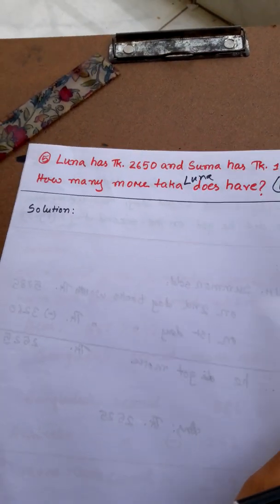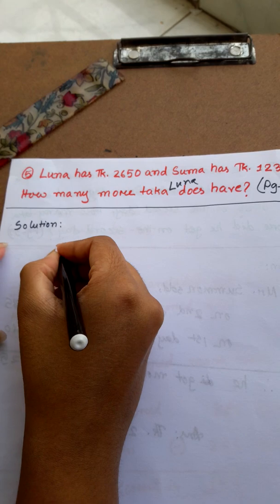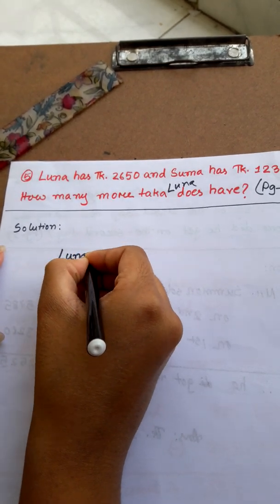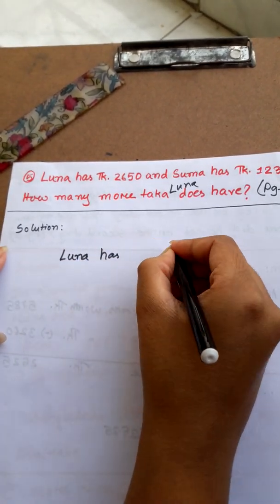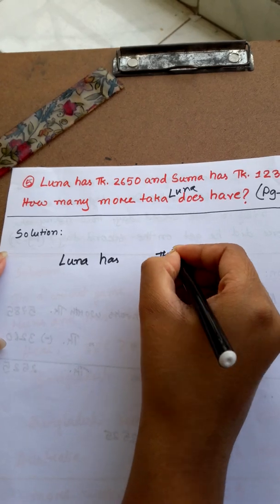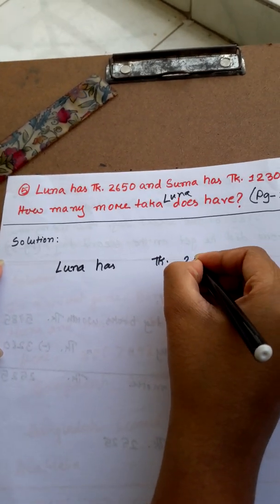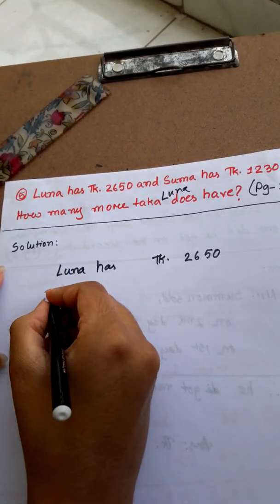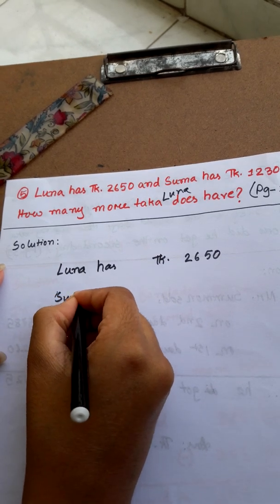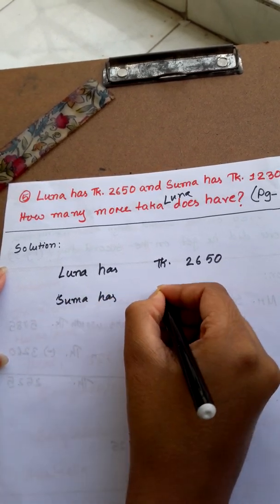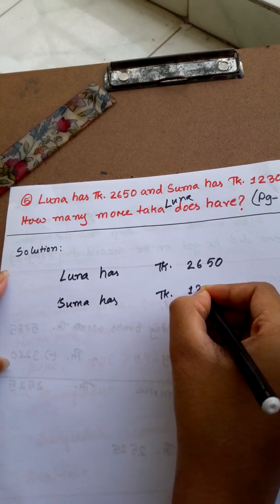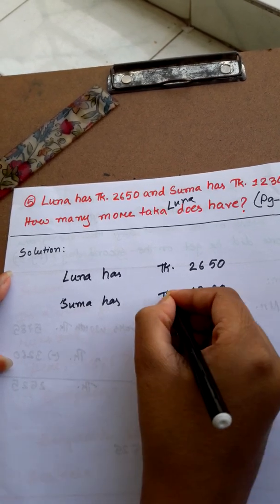So we have to write it: Luna has Taka 2,650 and Suma has Taka 1,230.